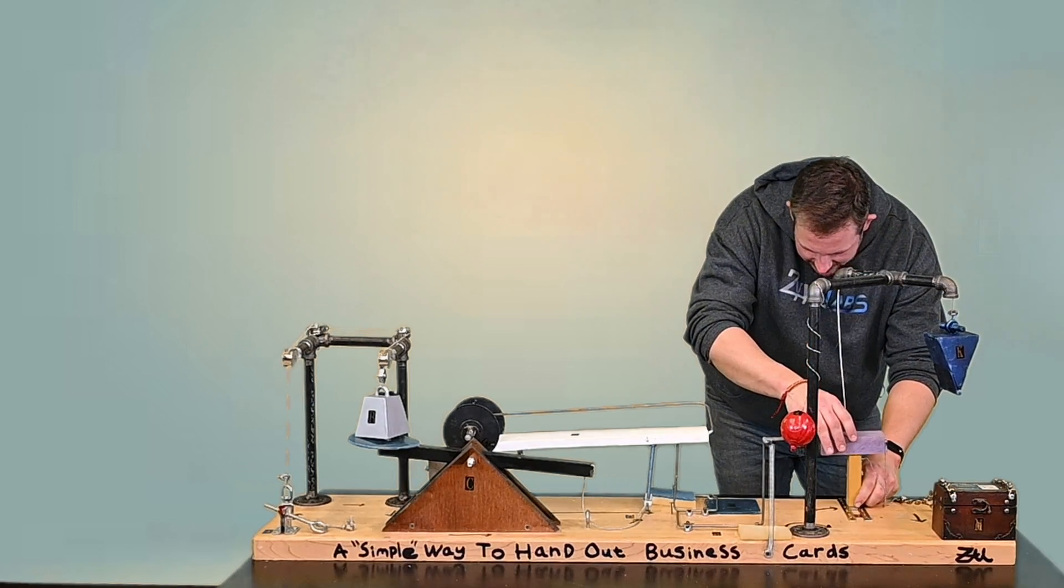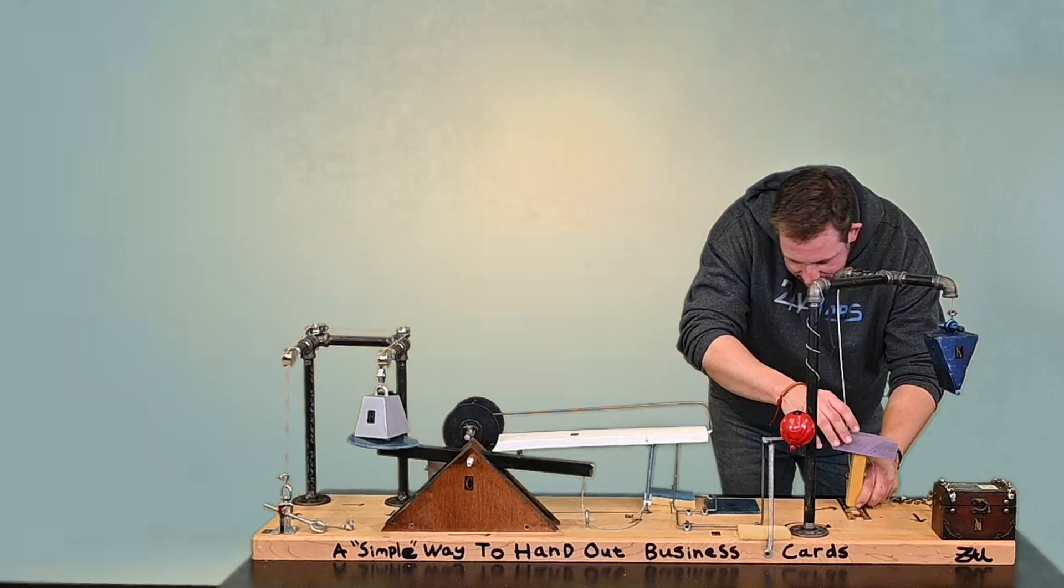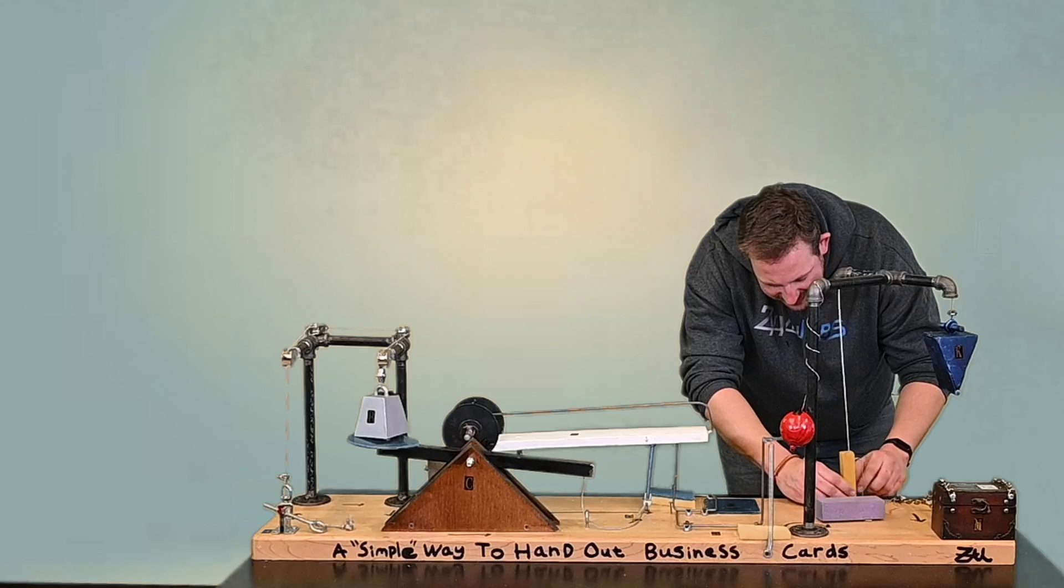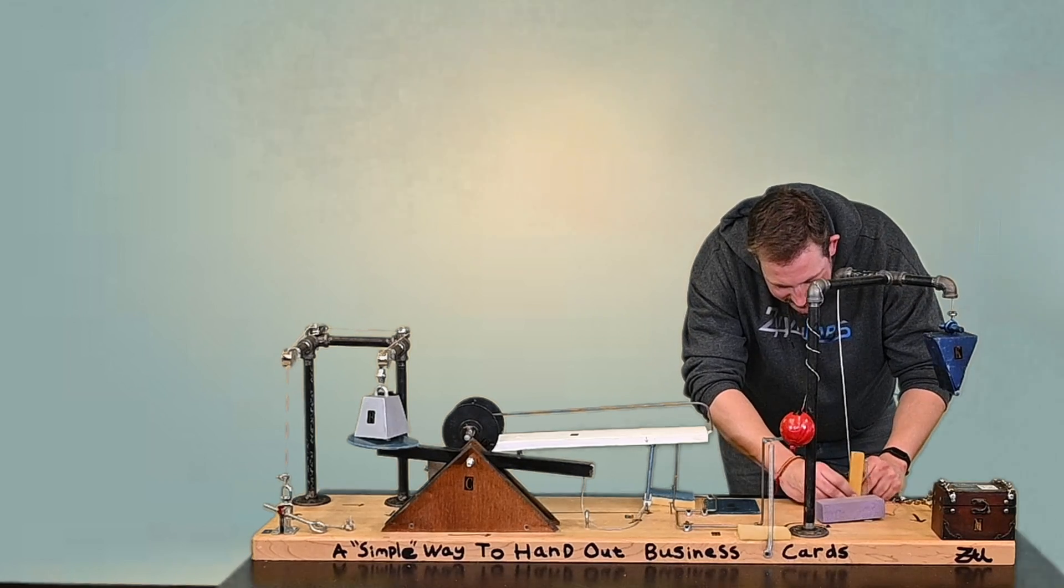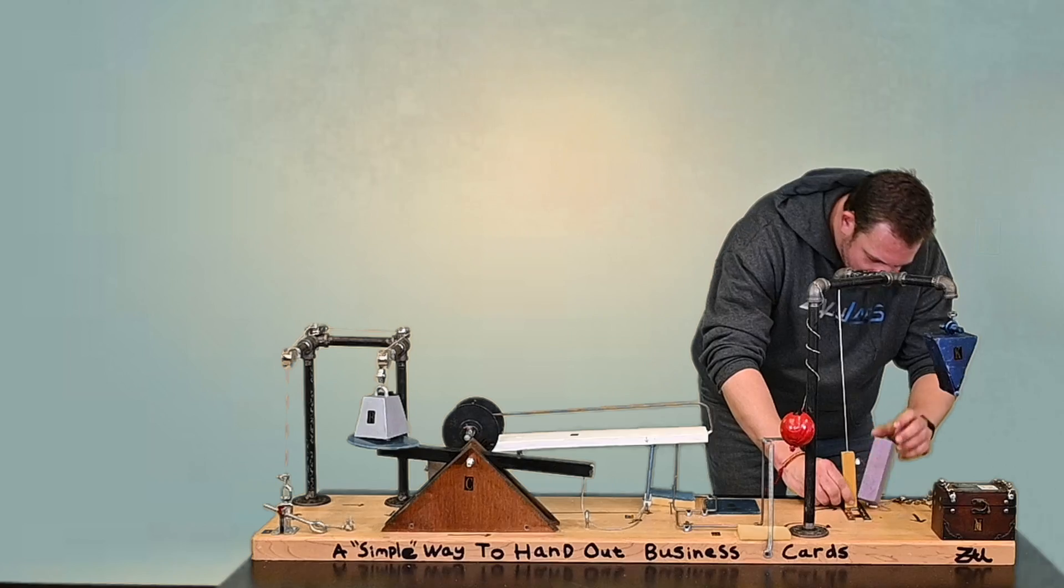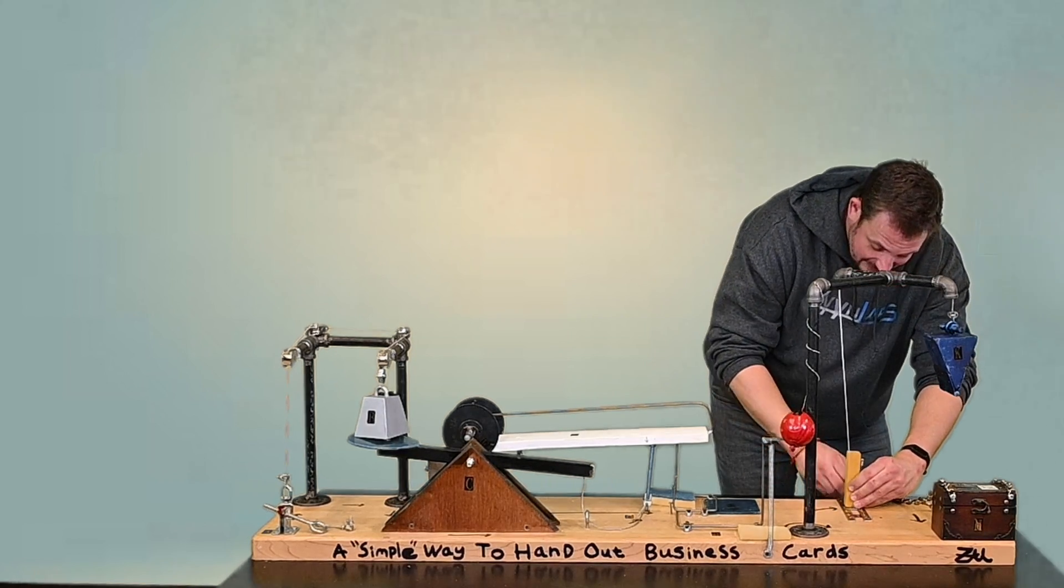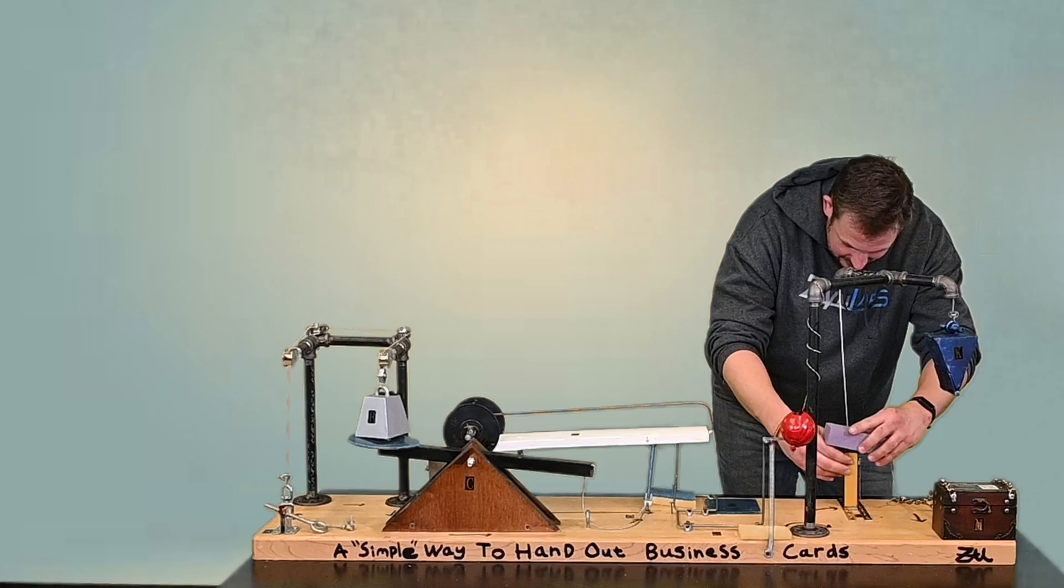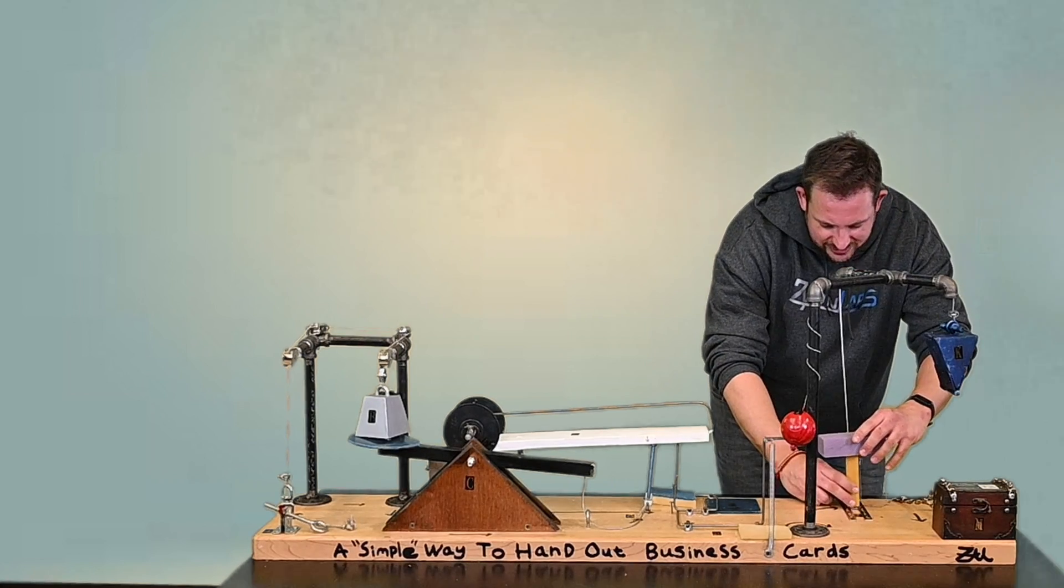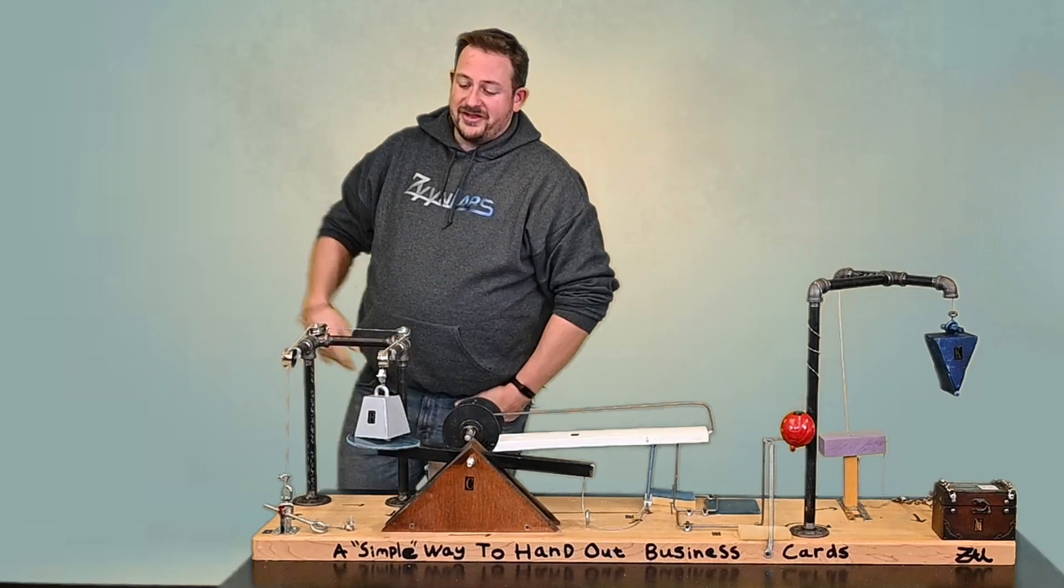Perched precariously. Always the hardest part to set up. Perched precariously. Also what we call a hair trigger in Rube Goldberg machines. Perched precariously. There we go, and there you have it.